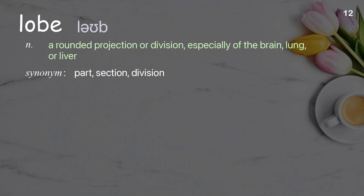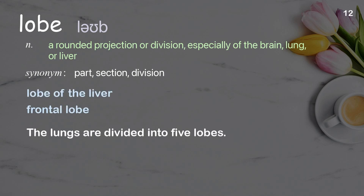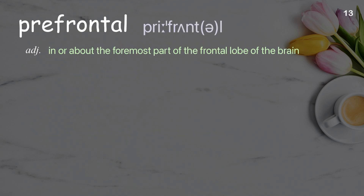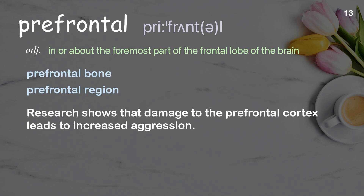Lobe: a rounded projection or division, especially of the brain, lung, or liver. Examples: frontal lobe, lobe of the liver, frontal bone, prefrontal region. Research shows that damage to the prefrontal cortex leads to increased aggression.